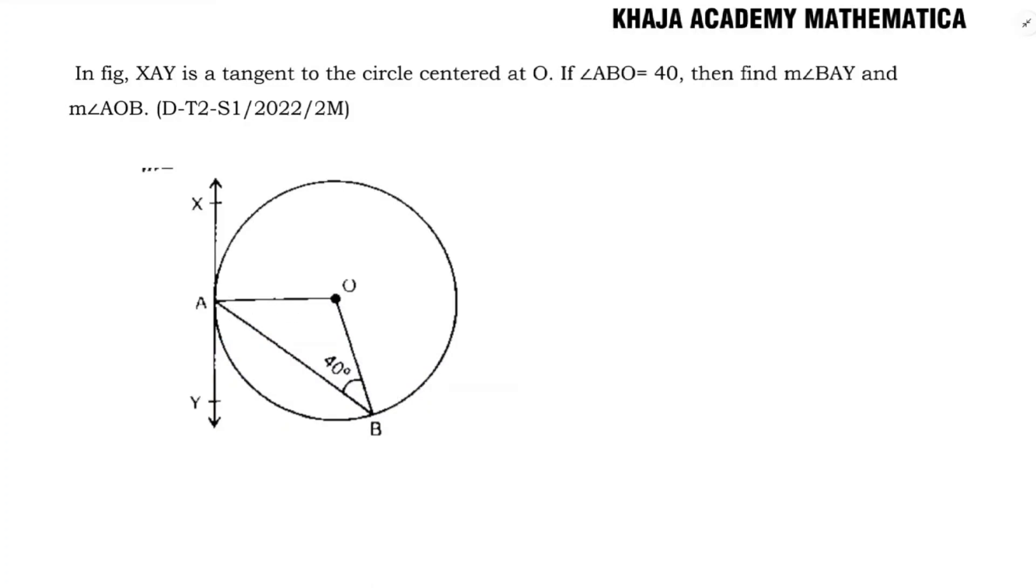I'll take triangle AOB. In triangle AOB, OA equals OB because they are radii. So angles opposite to equal sides are equal. Therefore, angle OAB also will be 40 degrees. Angle OAB equals angle OBA equals 40 degrees.